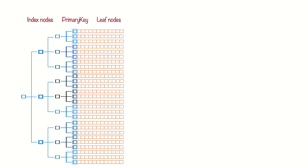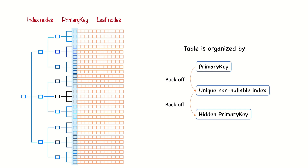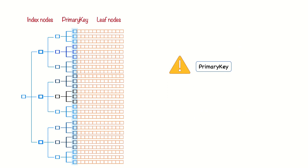By default, InnoDB uses the primary key for the clustered index. If you don't define a primary key, InnoDB will try to use a unique non-nullable index instead, and if there is no such index, InnoDB will define a hidden primary key for you and then cluster on that. A clustering primary key can help performance, but it can also cause serious performance problems. Thus, we should think carefully about clustering, especially when we change a table's storage engine from InnoDB to something else or vice versa.